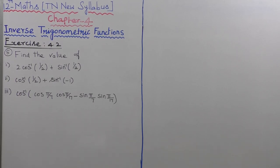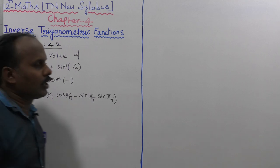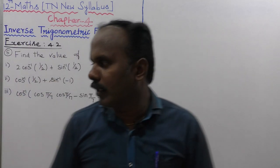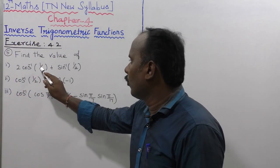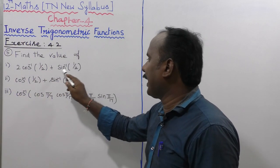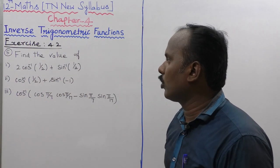X is 4.2, 5th sum. Find the value of the first subdivision: 2 into cos inverse of 1 by 2 plus sin inverse of 1 by 2.